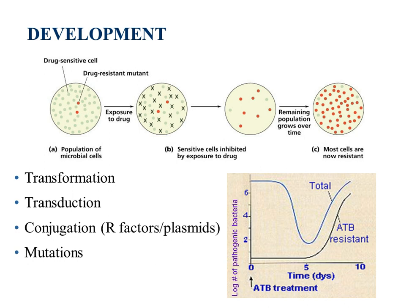Conjugation: two bacteria get together — one with drug-resistant genes, one without. They sexually reproduce and a plasmid is passed between them; that plasmid may carry drug-resistant genes, so the recipient cell now has drug-resistant genes. Or resistance could arise from a random mutation, or an induced mutation due to UV radiation or other factors.